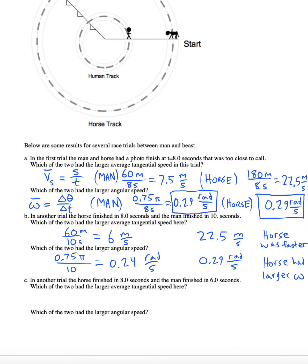But now, let's say the horse finishes in eight seconds but the man finishes in six. Who had the larger tangential speed now? Now the man went up to 10 meters per second - pretty fast for a man. But the horse still has 22.5 meters per second, the horse was faster. Who had the larger angular speed though? Let's recalculate. Now the man had the larger omega, which is what he wanted.